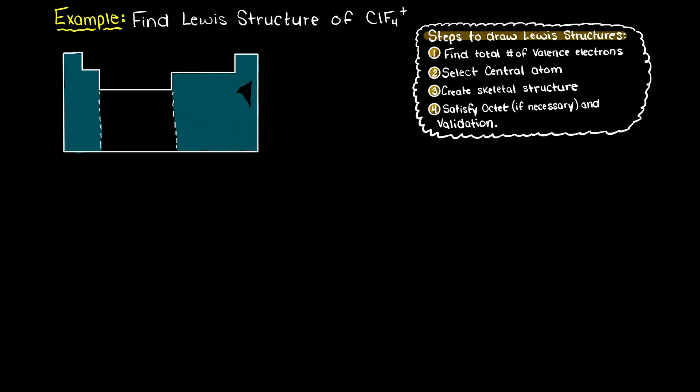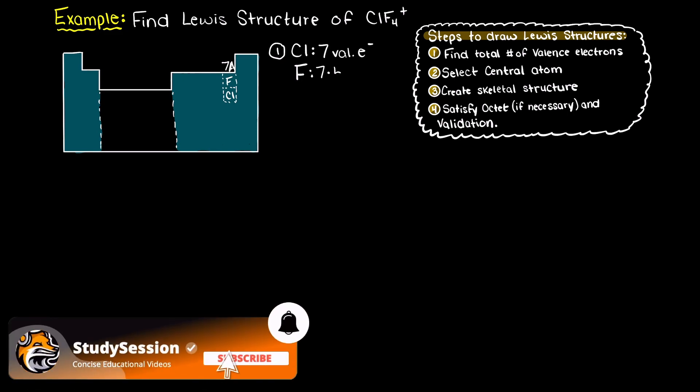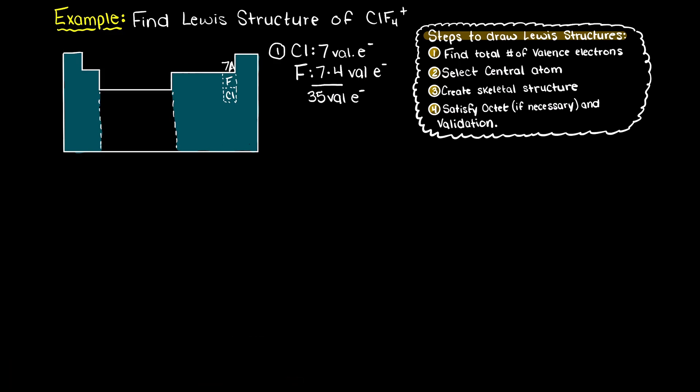First we need to find the total number of valence electrons that are present within our compound. Remember our trick to easily remember how many valence electrons every atom in groups 1a to 7a has. We look at the group number, the column that our atom resides in, and that will tell us the number of valence electrons that atom has in a neutral state. Therefore, since both chlorine and fluorine fall in group 7a, we know that each of these atoms will have 7 valence electrons.